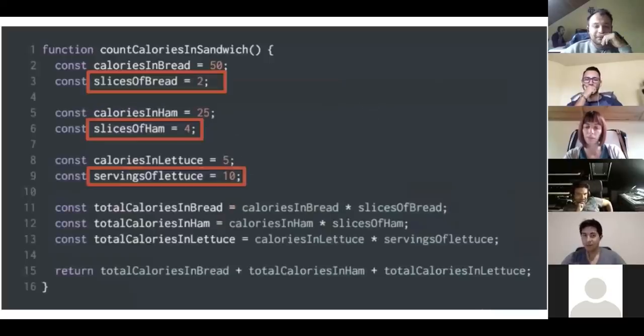So again, we go to the next slide and we see a lot more code. But this time, you know what those magical variables are. We put the number two in a variable called slices of bread. We put the variable four in a variable called slices of ham. We put the number ten in a variable called servings of lettuce.